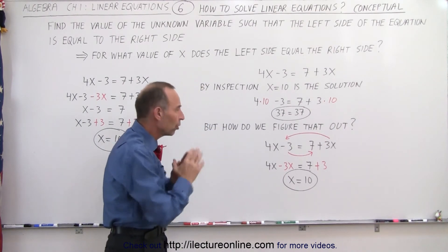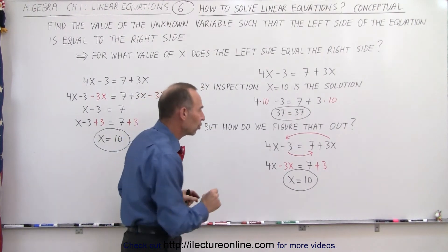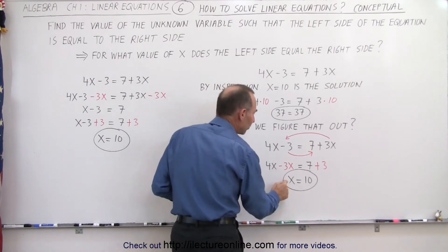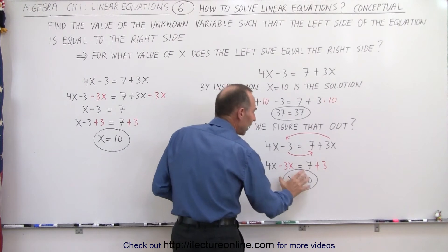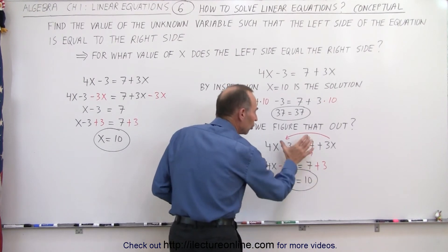Then we reduce both sides. We combine like terms, as we call it, so that 4x minus 3x is x and 7 plus 3 is 10, and there it clearly shows that x equals 10 is the solution to this equation.